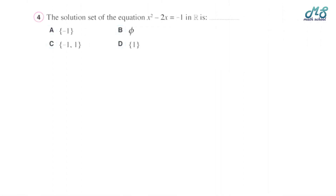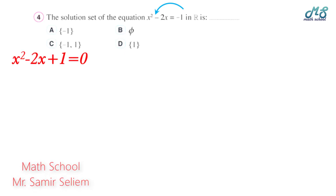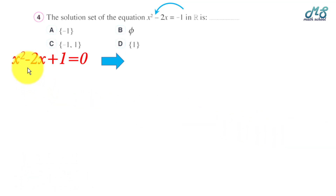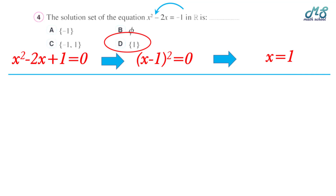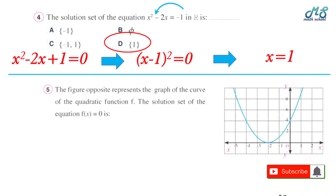Number four: the solution set of x squared minus 2x equals negative 1. Move negative 1 to the other side to get x squared minus 2x plus 1 equals zero. This is a perfect trinomial, written as x minus 1 squared equals zero. Taking the square root gives x minus 1 equals 0, so x equals 1. The correct answer is D.